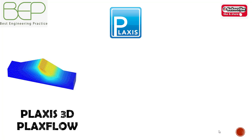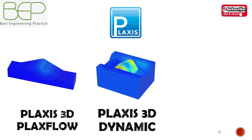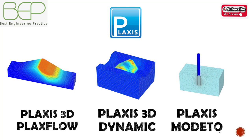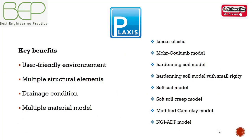The modules of PLAXIS 3D include PLAXIS 3D Flow for flow analysis and PLAXIS 3D Dynamics for dynamic analysis. The key benefits of PLAXIS are its user-friendly environment, multiple soil elements, drainage conditions, and multiple material models including linear elastic, Mohr-Coulomb, hardening soil model, hardening soil with small strain model, soft soil model, soft soil creep model, modified Cam Clay model, and the UBC3D model.